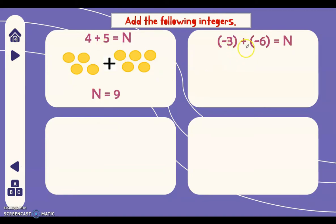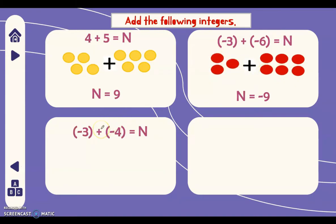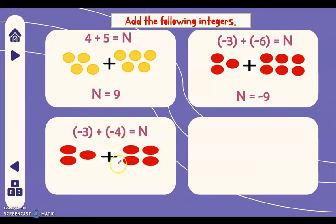Next, negative three plus negative six: we represent this as three red chips plus six red chips since they are both negative. We cannot form zero pairs since they are all negative, so we just add all of them together — n equals negative nine. Next, negative three plus negative four: three red chips plus four red chips give us negative seven.